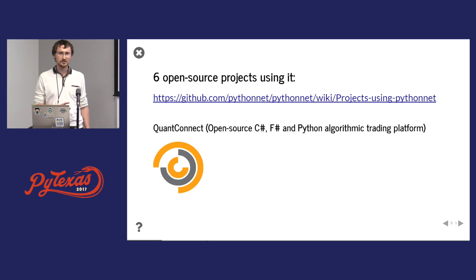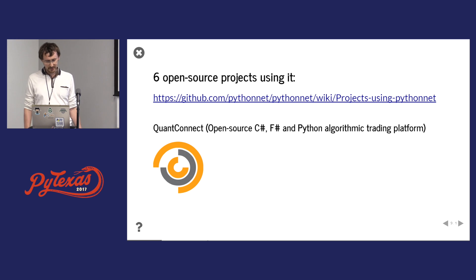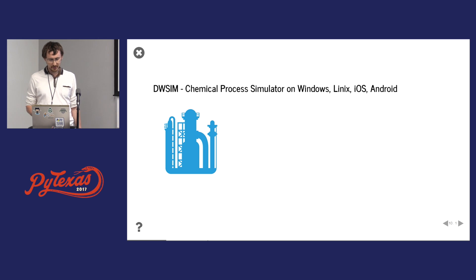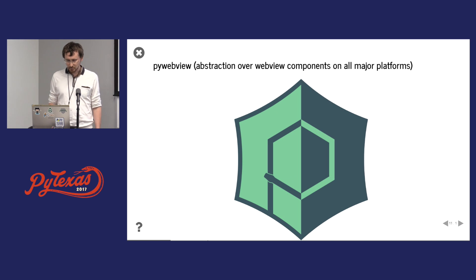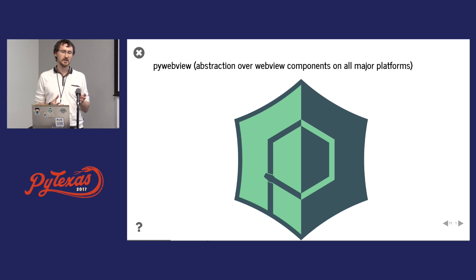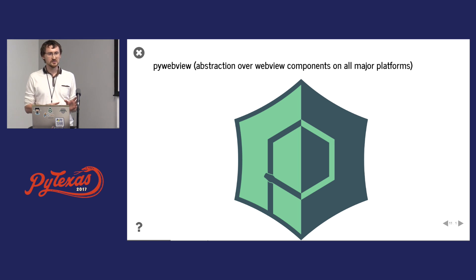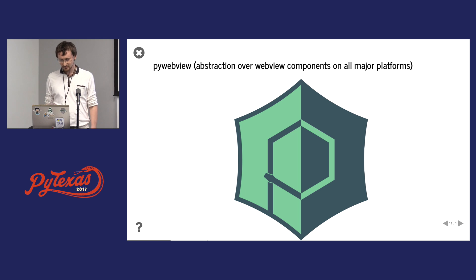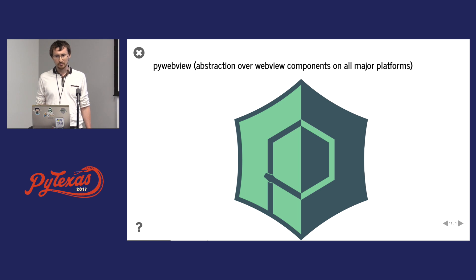I want to give a shout out to some projects that use Python for .NET and push it to the limit. One is QuantConnect, a financial algorithmic trading platform. Another is a process simulator that works on all major platforms. PyWebView is really pushing Python.NET to the boundary — it embeds the WebView component from WinForms, QT, or GTK. It's a very thin wrapper, like a lightweight Electron. On Windows it uses Python.NET but also has the option to use PyWin32.